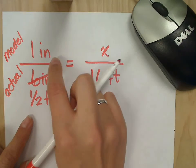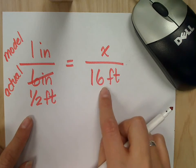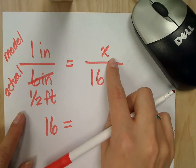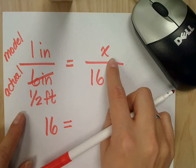So now I can cross multiply. I have 1 times 16, which is 16. And half times x? Or 0.5 times x? 0.5x. Sure.